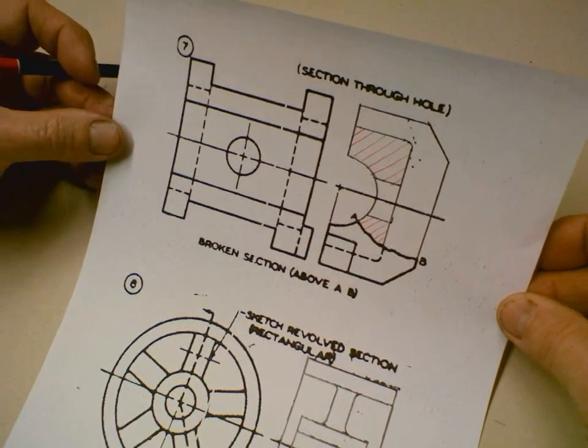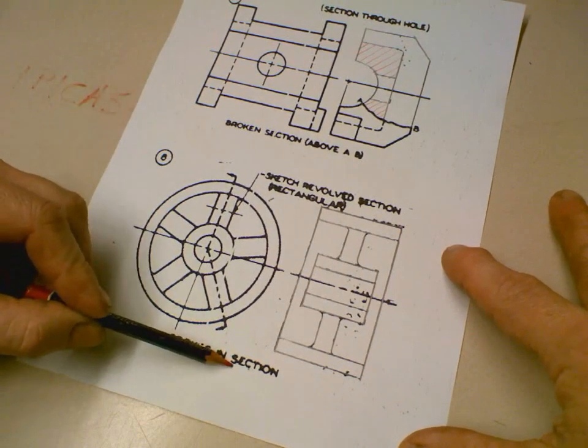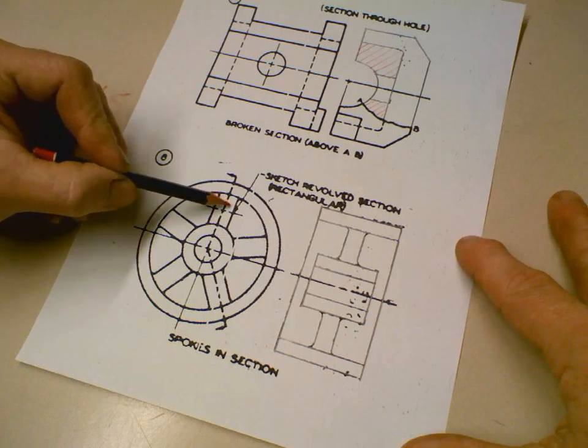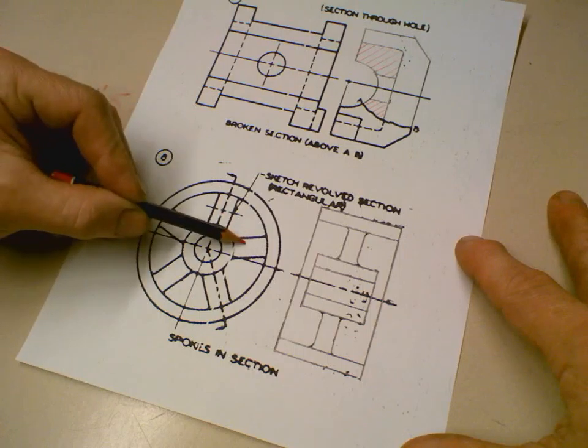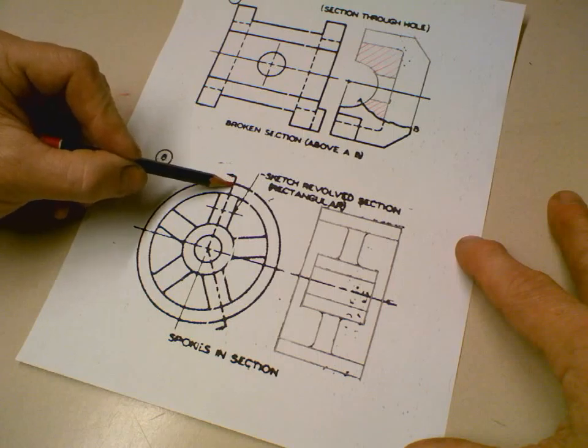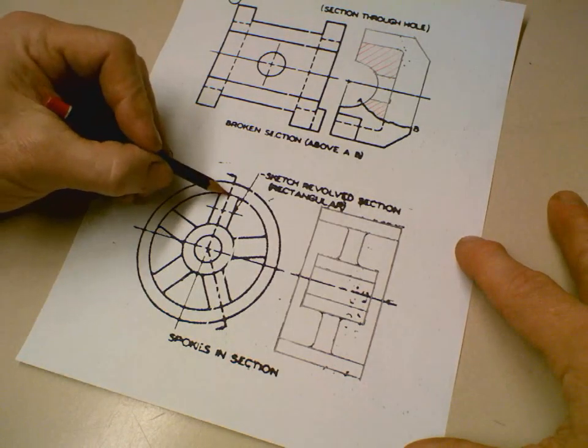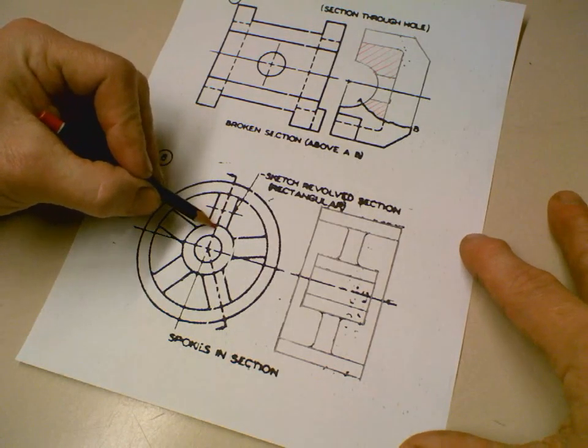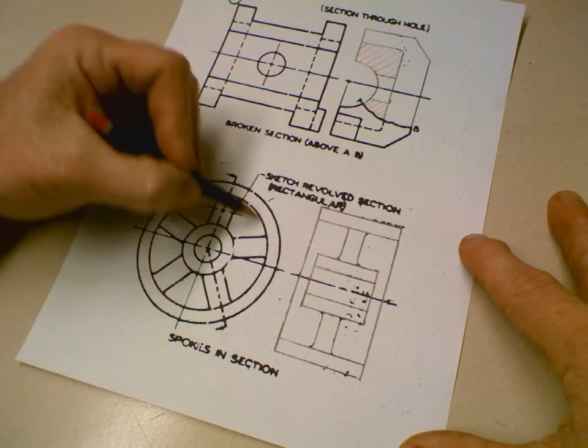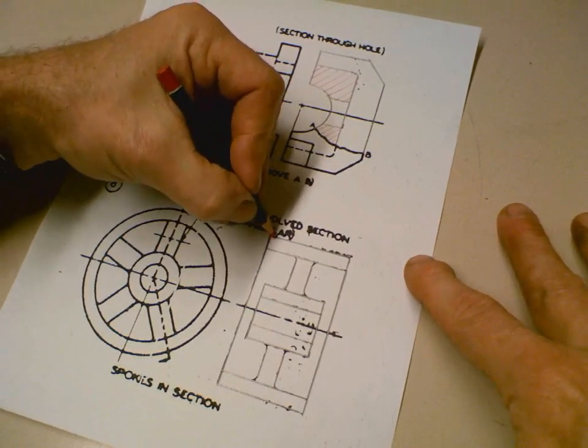And let's look at one more, number eight. Now these are spokes and sections. All right, these are kind of like those webs and ribs. It's not solid in here, is it? They're just spokes and there's five of them equally spaced. The cutting plane is going through and it's cutting through this way. Okay, so even though we're cutting through that spoke, you know, do we section it? Well, if we were to section it here, it would represent that that would be a full circle of spoke and it's not.